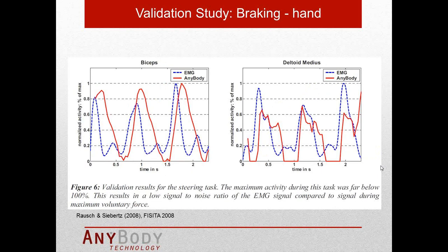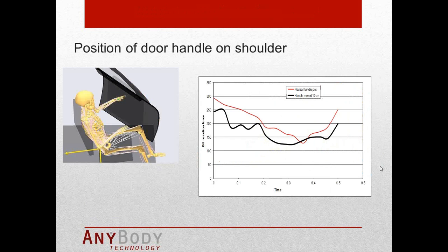Another example: if you want to analyze a subject sitting on a seat closing or opening the car door, you can analyze different positions of the door handle and look at the shoulder reaction forces — specifically the glenohumeral (GH) joint reaction force. Moving the handle just 10 centimeters creates a completely different load — almost 50 Newton difference in certain areas of the shoulder joint reaction forces.